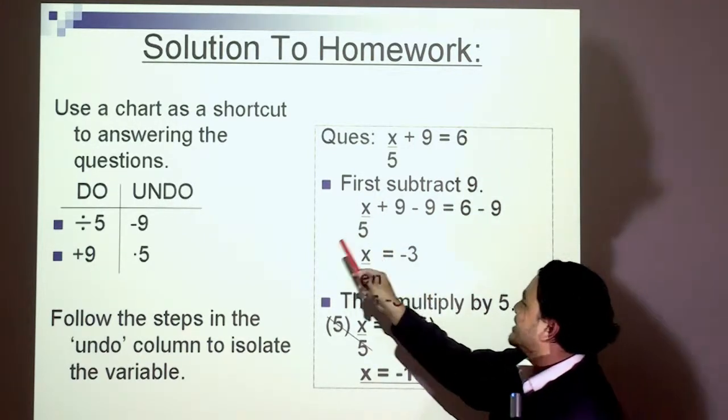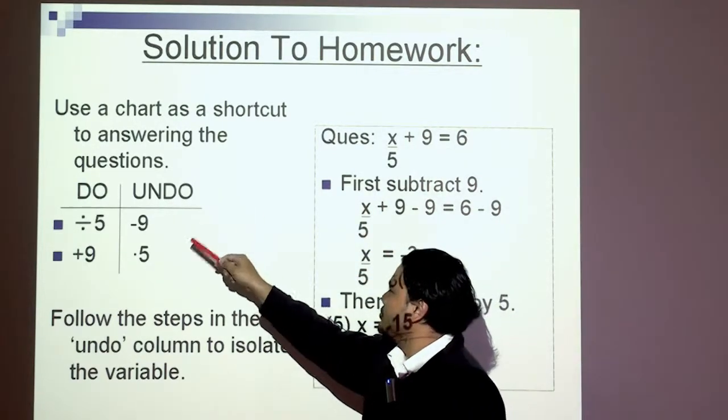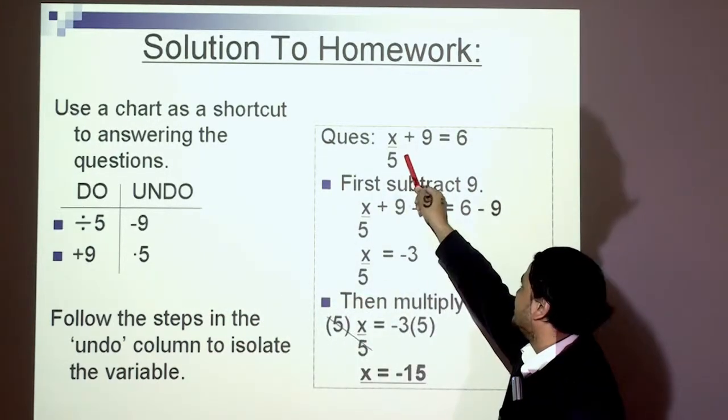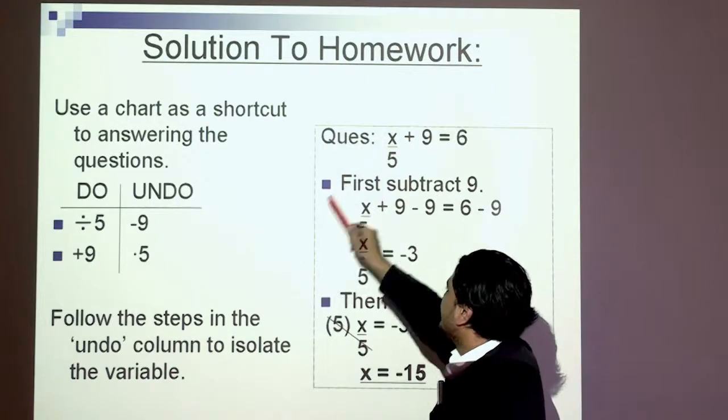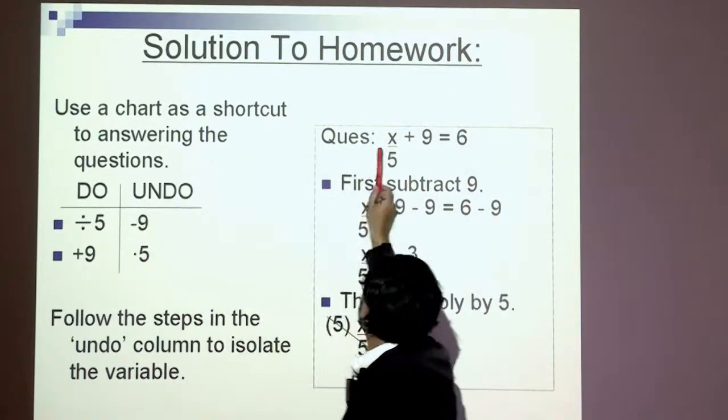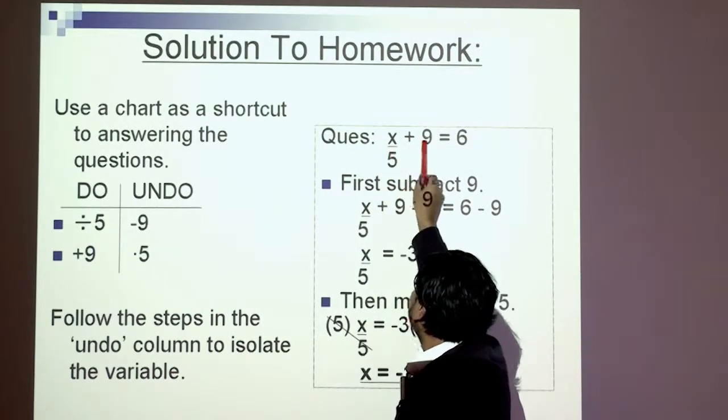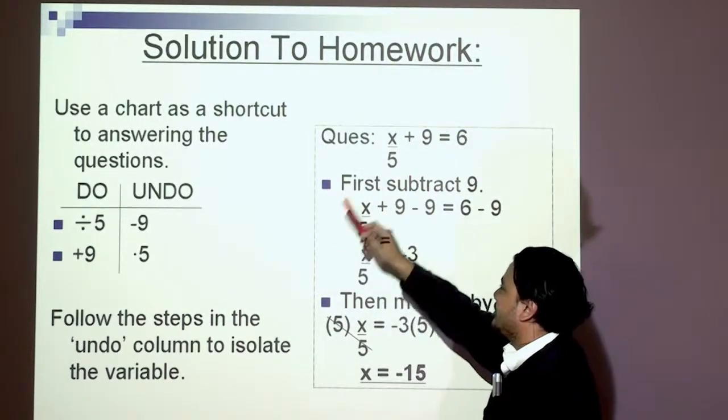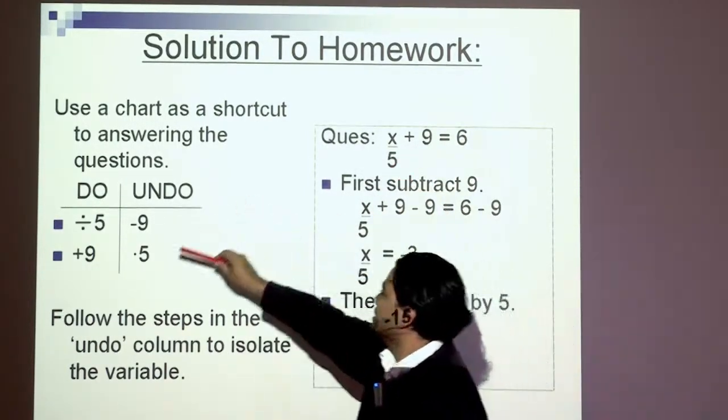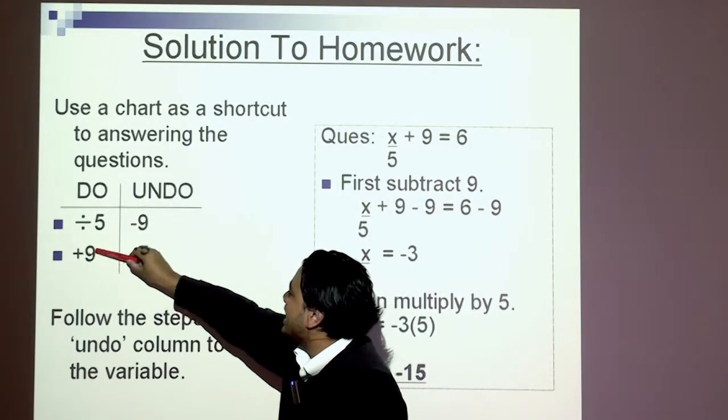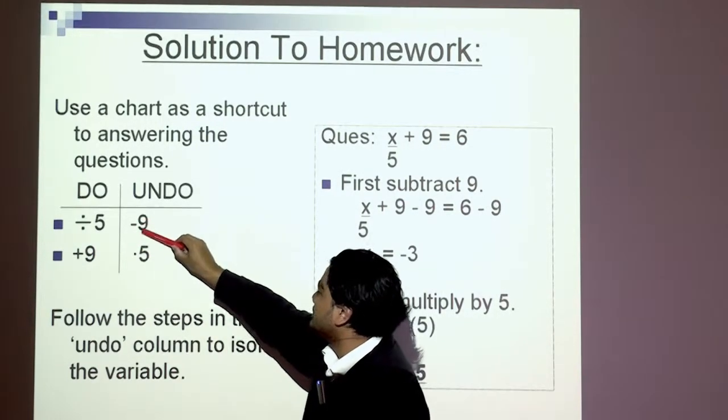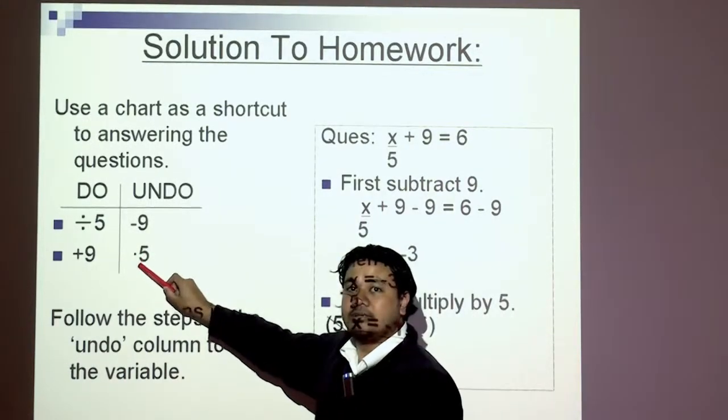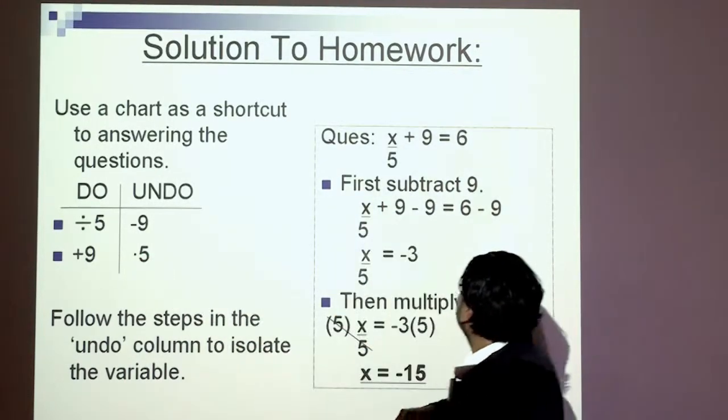Just a reminder, the question was x over 5 plus 9 equals 6, and your job is to solve for x. Last week we used a do-undo chart as a guide. The first thing to do is look at x. What happened to x? x was divided by 5 and then we added 9. To solve for x we work backwards. Instead of adding 9, we take away 9 first, and instead of dividing by 5, the opposite operation is multiplying by 5.